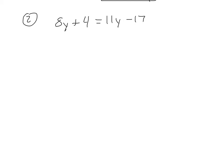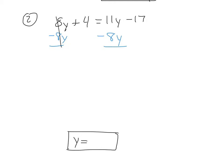We have variables on both sides — not the end of the world. We want to get the variable by itself on one side equal to some number. I'm going to subtract 8y from both sides. Those cancel because 8y minus 8y is 0, and I get 4 equals 11y minus 8y — that's 11 yo-yos minus 8 yo-yos, which is 3y — minus 17. The goal is to get the variable by itself, so I'll deal with the constant terms first.